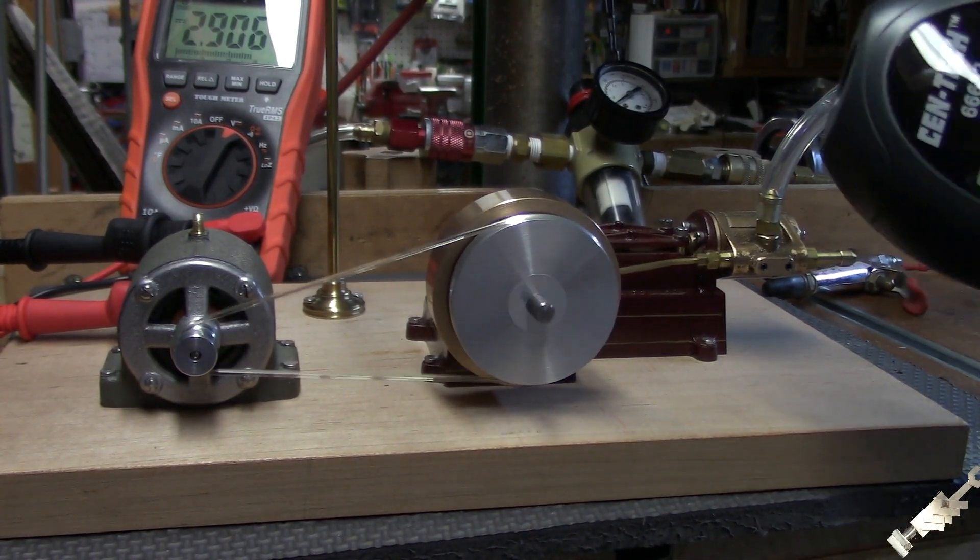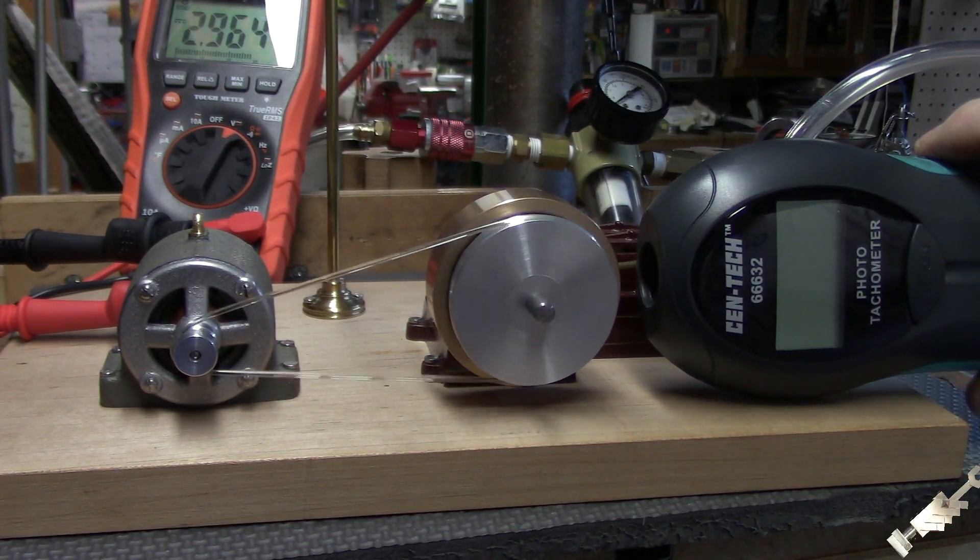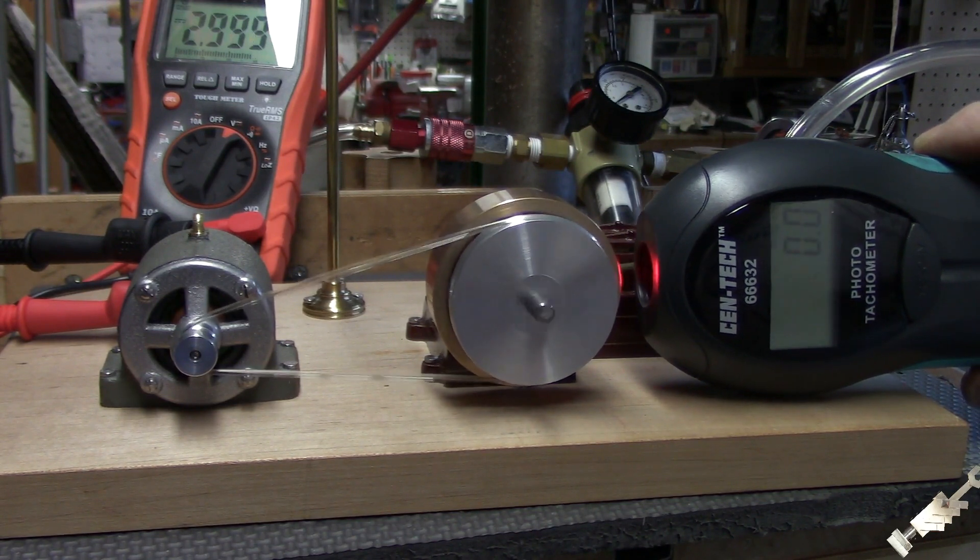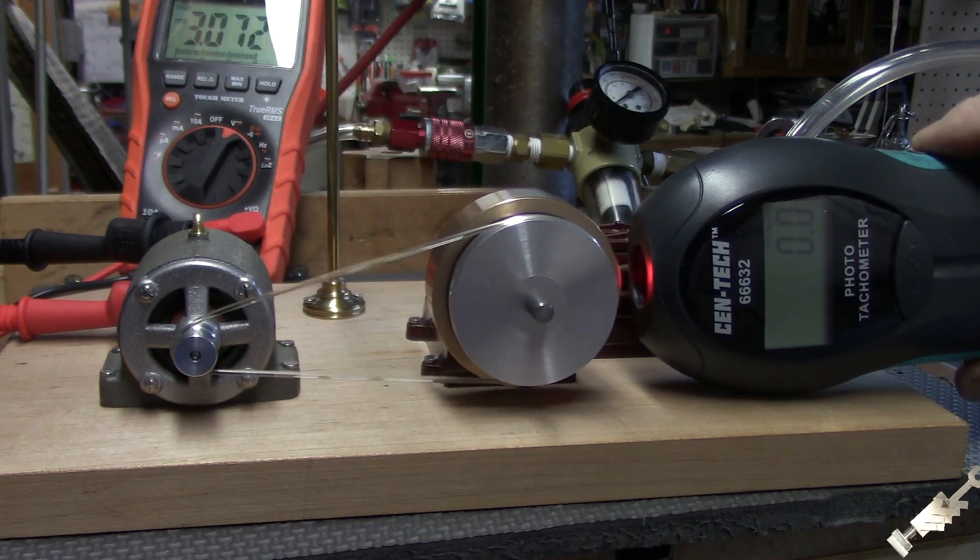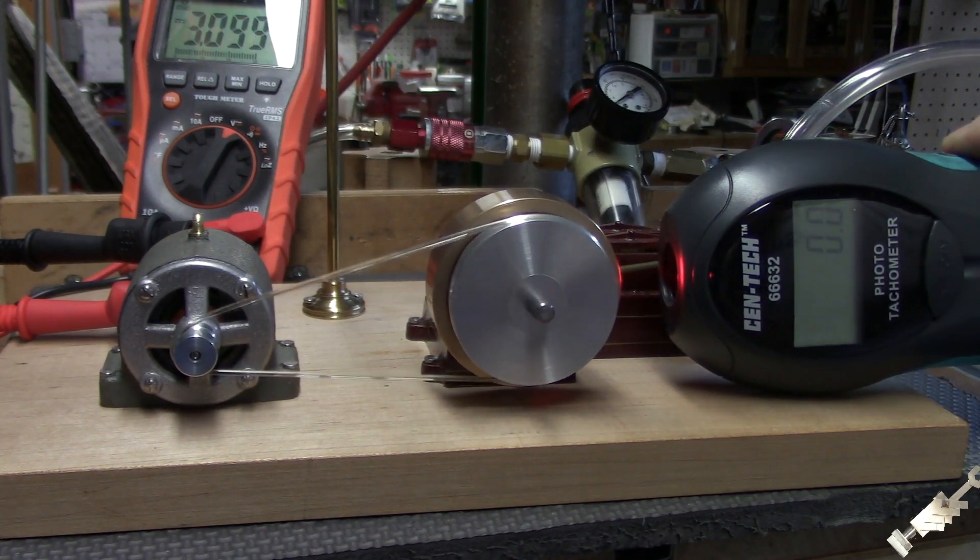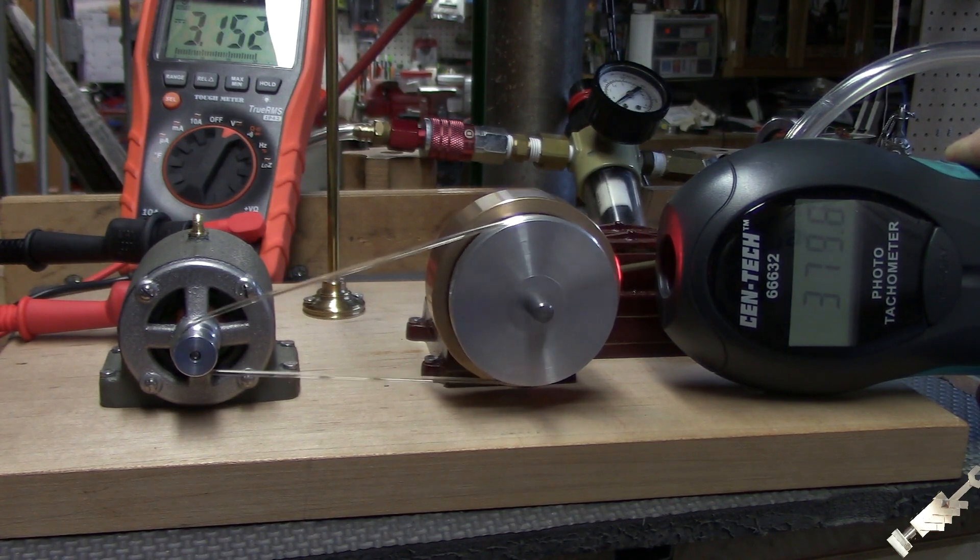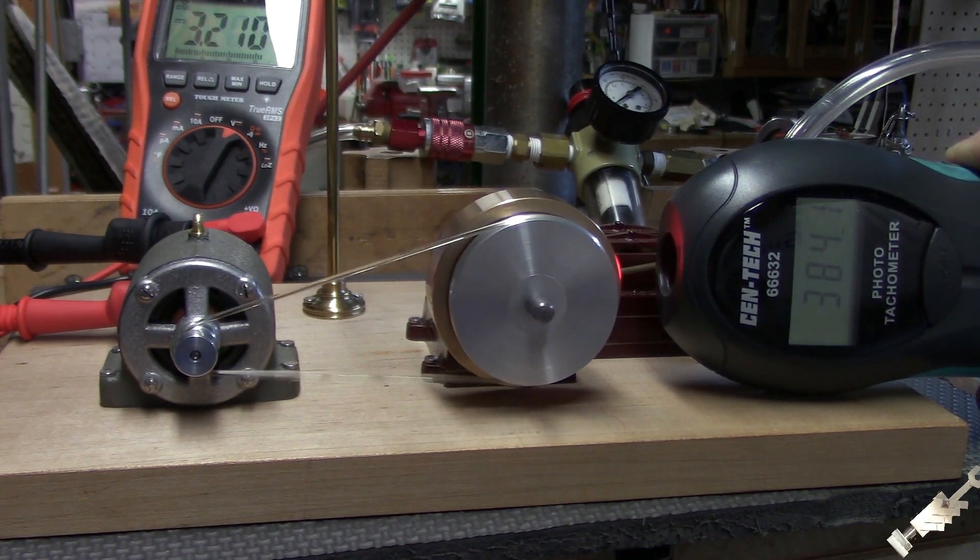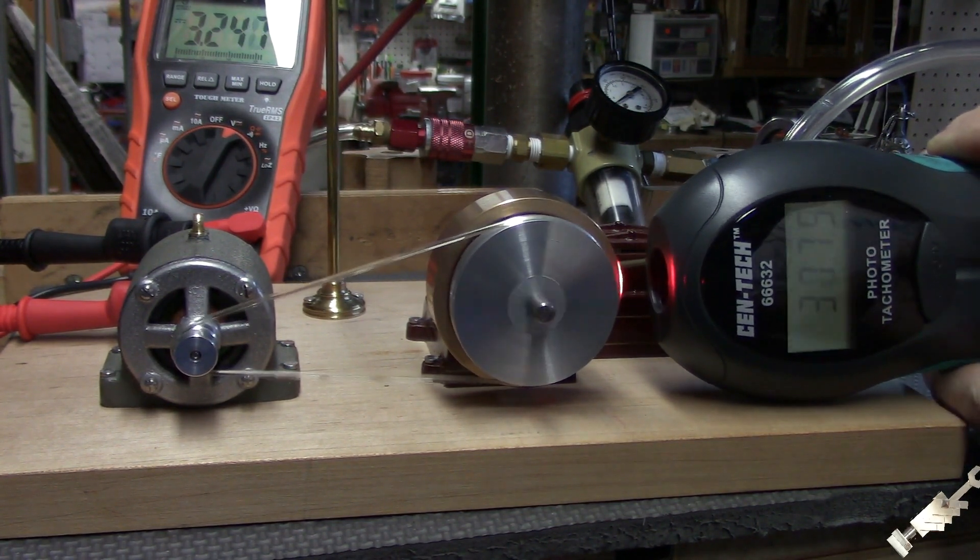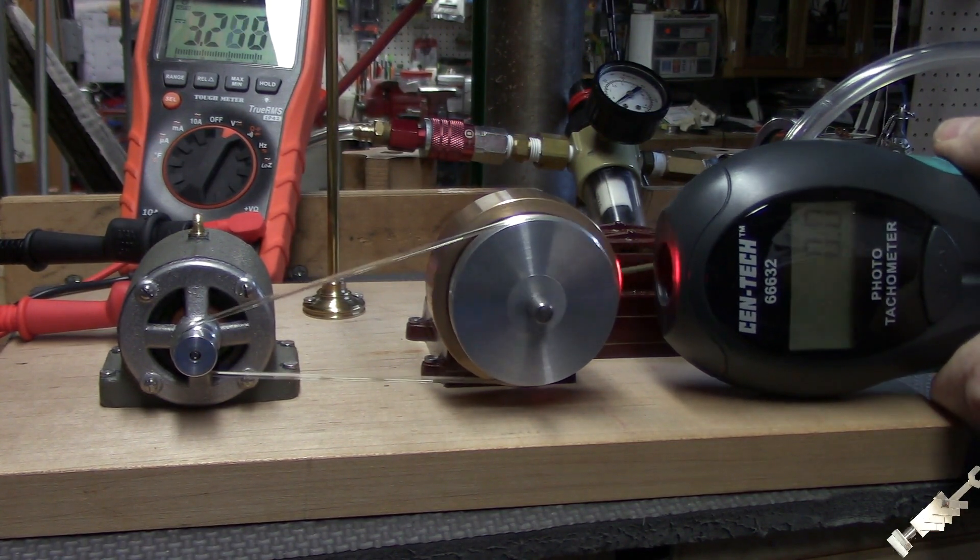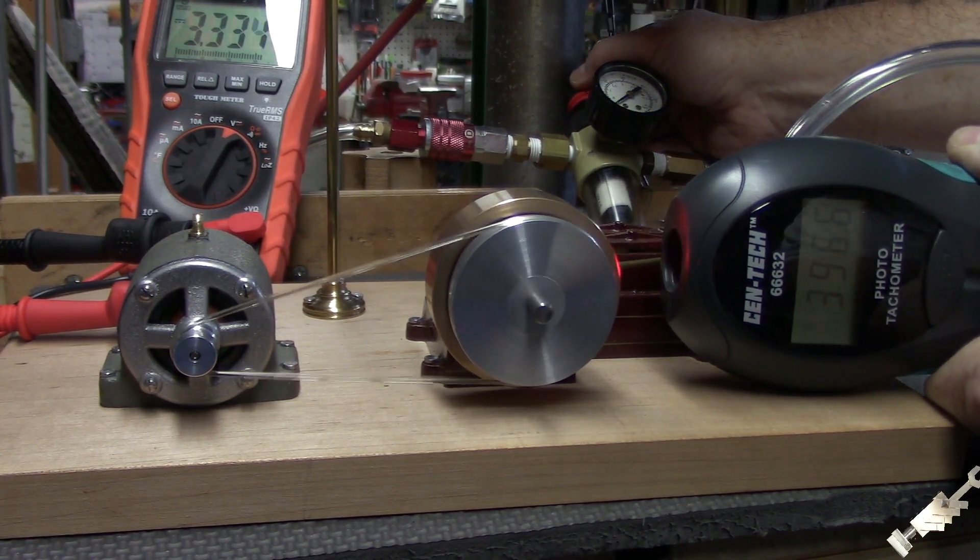Alright, so let's try a little experiment. The light bulb, if you guys can see, the LED is barely lit. So I got a voltmeter hooked up, and it's reading just under 3 volts. This is about as slow as it's going to go. It's about 380 RPMs and just about 3 volts there. So let's see if we can crank up the speed a bit.